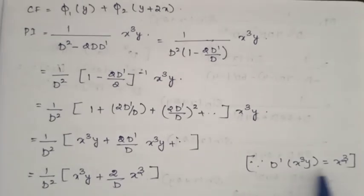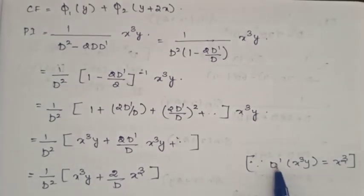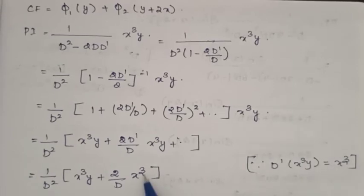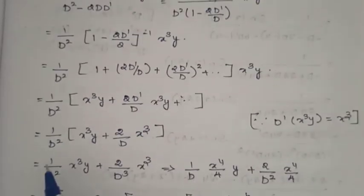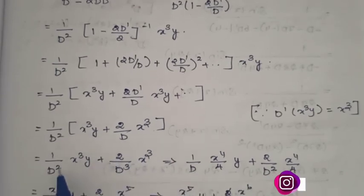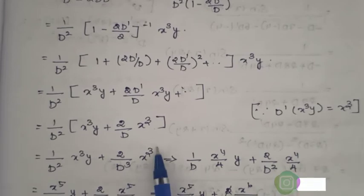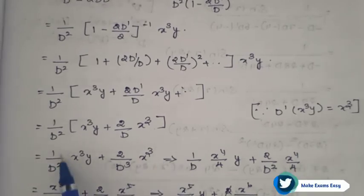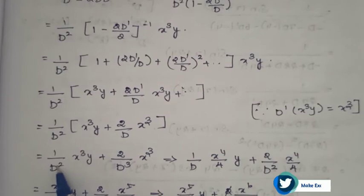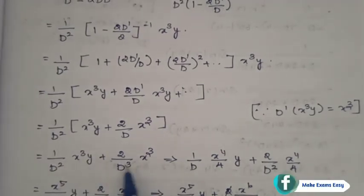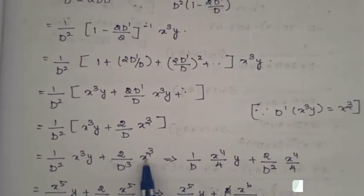D' of x cubed y is equal to x cubed, since differentiating with respect to y once brings down y to 1, leaving x cubed. Substituting back: 1 by D squared times [x cubed y plus 2 by D cubed times x cubed]. Here 1/D² means integrate twice with respect to x, and 1/D³ means integrate three times with respect to x.